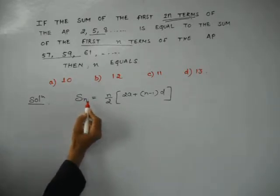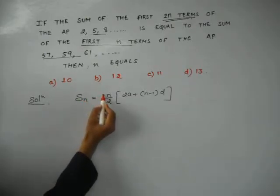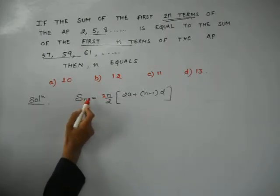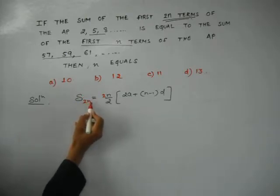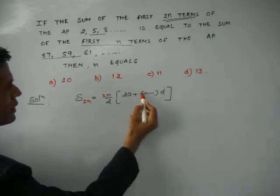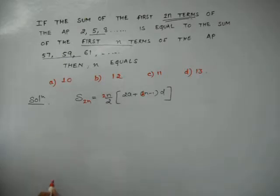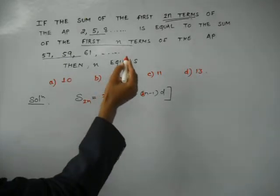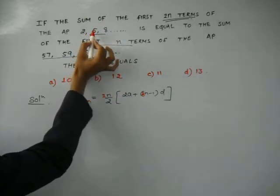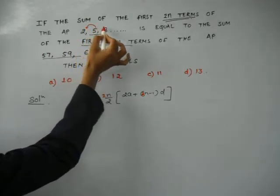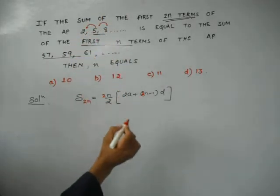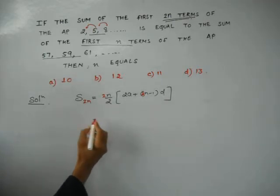That sum to 2n terms, so this n should be replaced by 2n initially. So I am writing 2n, n is replaced by 2n, this n is nothing but 2n. Rest remaining same. If we consider d as the common difference, then common difference is 5 minus 2, which is 3. Same as 8 minus 5, 3. So, this d is over here 3.